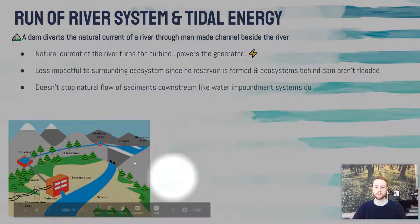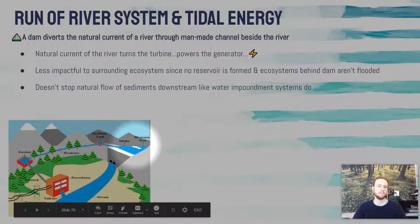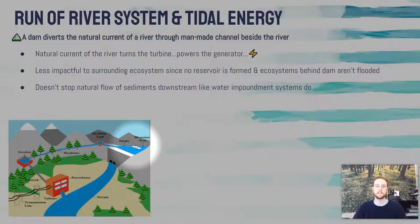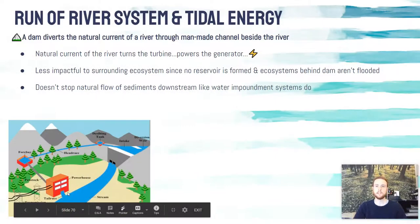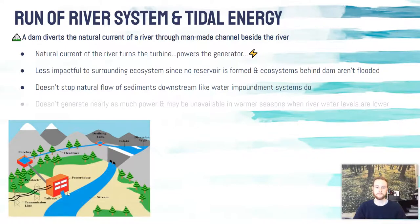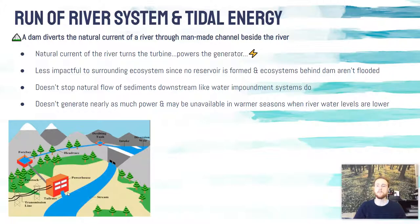Looking at a diagram, we have a dam, and there's some accumulation of water, but it doesn't flood to the same degree as a water impoundment system. It diverts water through a man-made channel that runs through a powerhouse containing the turbine and generator, and then back into the stream — less impactful on the hydrology of the stream. However, it doesn't generate nearly as much electricity, and it can fluctuate with the river level, so less rainfall or snowmelt can decrease the amount of power generated.